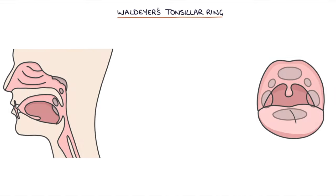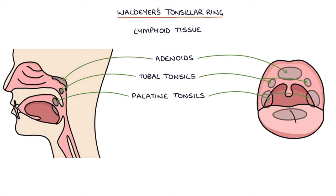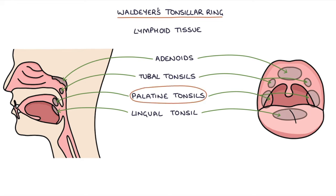Let's talk about Waldeyer's tonsillar ring. In the pharynx at the back of the throat there is a ring of lymphoid tissue. There are six areas of lymphoid tissue in Waldeyer's ring, which includes the adenoids, tubal tonsils, palatine tonsils, and the lingual tonsil. The palatine tonsils are the ones typically infected and enlarged in tonsillitis — these are the tonsils on either side at the back of the throat.